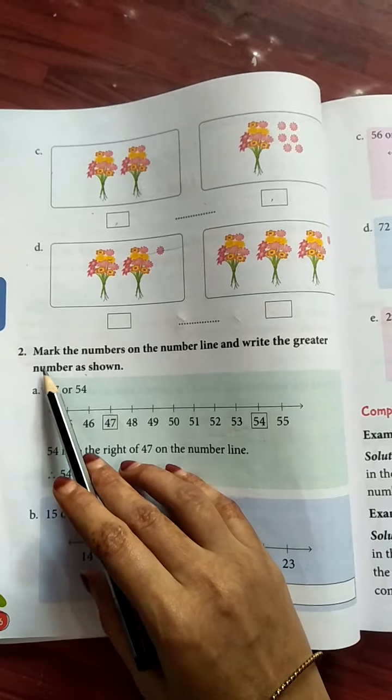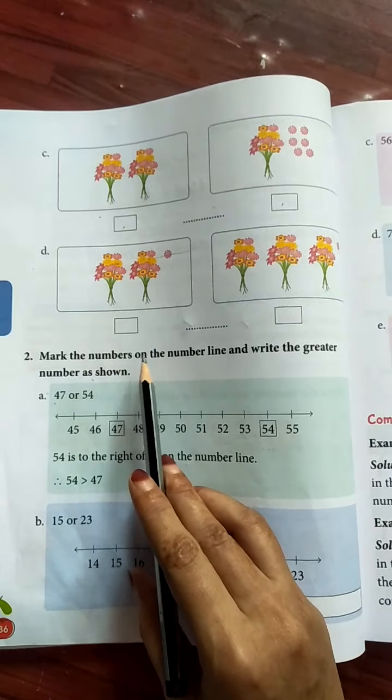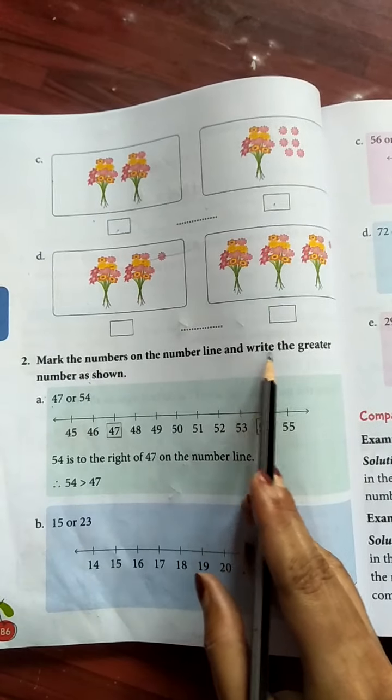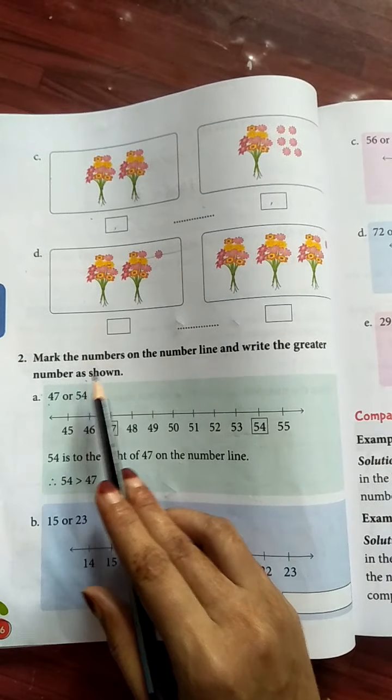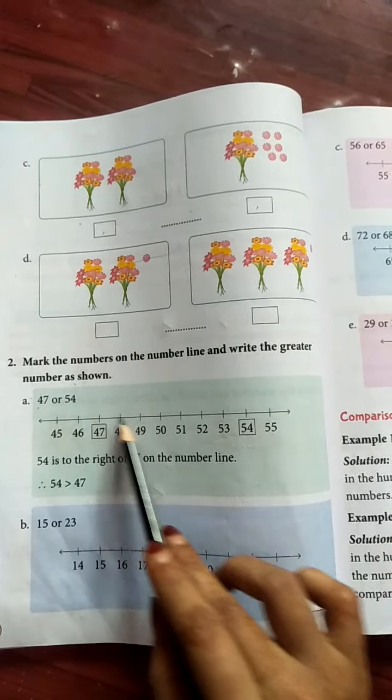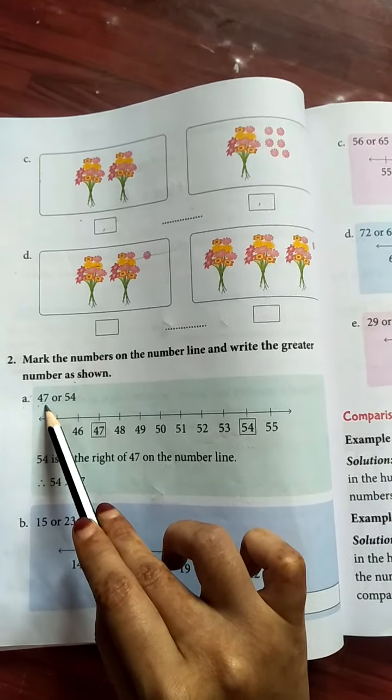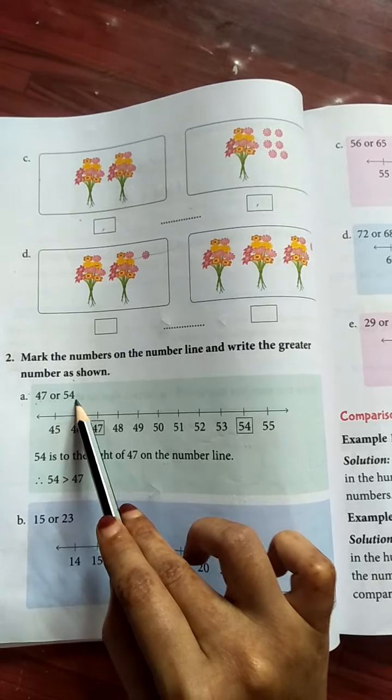Now see second main. Mark the numbers on the number line and write the greater number as shown. See here, what is this? This is the number line. Here A, 47 or 54.